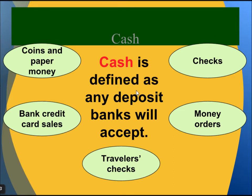Cash is defined as any deposit a bank will accept. For example, checks are cash. Coins and paper money are cash. Bank credit card sales, traveler's checks, and money orders are also considered cash.